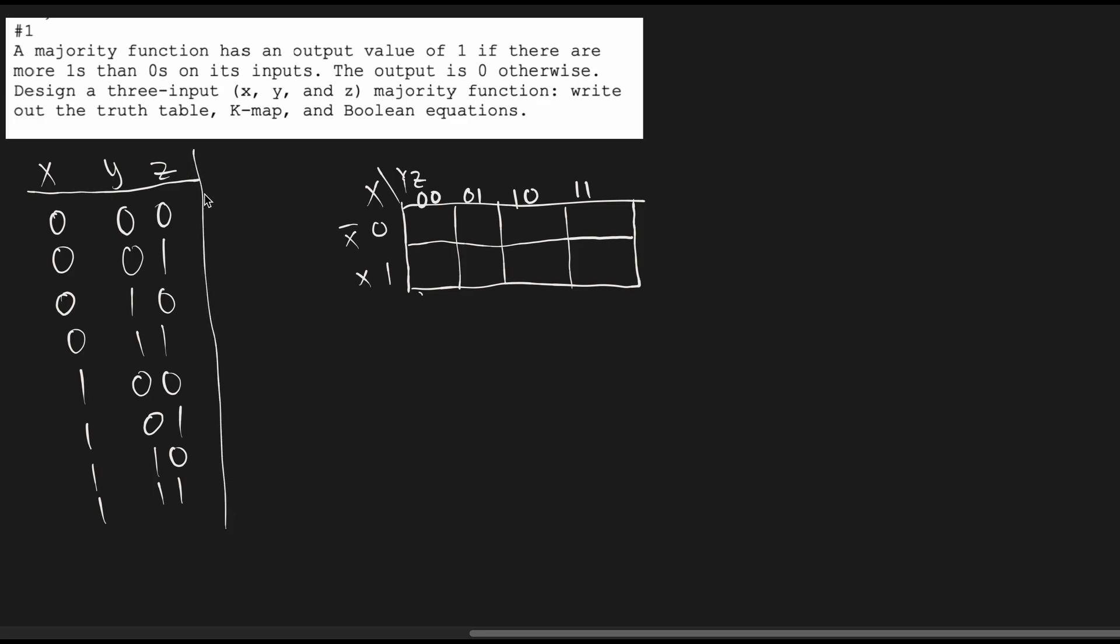After this, we're going to have our output, I'm just going to call this f1. And so our output, if we look at the instructions, the output value is one if there are more ones than zeros in the inputs. So we're going to look at the inputs, and if we have at least two ones, we're going to have a one output. Obviously, this first one is going to be a zero, this next one's a zero, zero, we have two ones in this next row so we're going to have a one here, we're going to have zero here, one here, one here, and one here.